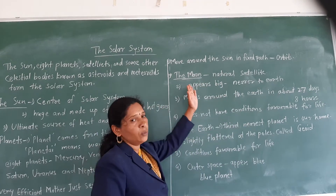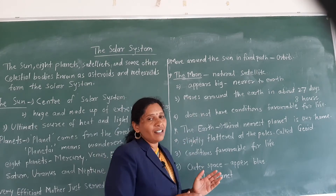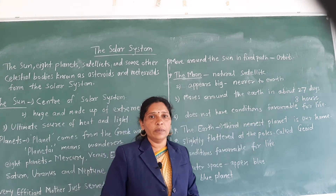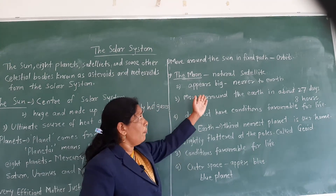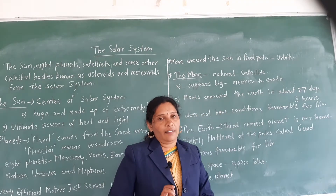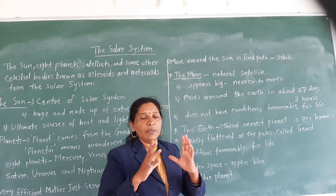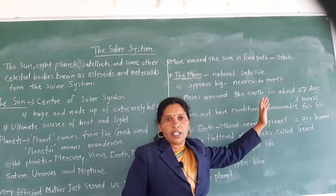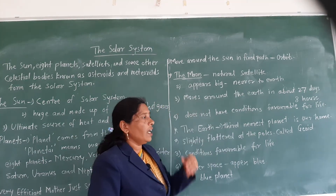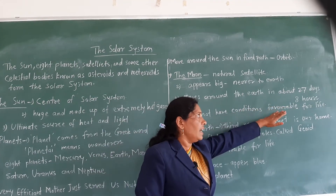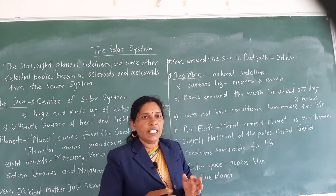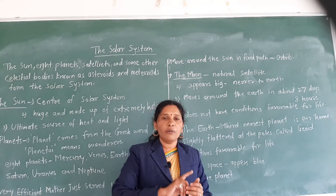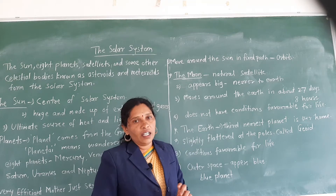Now let's see about the moon. The moon is the natural satellite of the Earth. It appears big from the Earth because it is very near to the Earth. It moves around the Earth in about 27 days and 8 hours — meaning it takes 27 days and 8 hours to complete one revolution around the Earth.